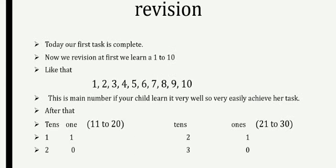Our first task is now complete. This message is also for parents: if your child has any confusion or is not understanding something, please help them. If a child learns to recognize the digits — what is 4, what is 8, what is 6, what is 1, what is 10 — they can very easily learn the complete counting. We previously learned 1 to 10, then 10s and 11 to 20, and now 21 to 30. Please help your child complete this first syllabus.